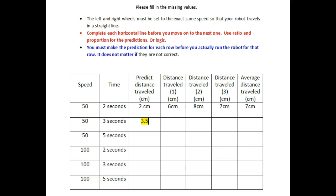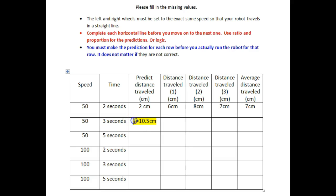Because we're going to run it for three seconds. Three and a half times three is ten and a half, so your answer is going to be ten and a half centimeters. You don't need to show the arithmetic — you can just put the result. That is your prediction. We don't know yet if it's correct.